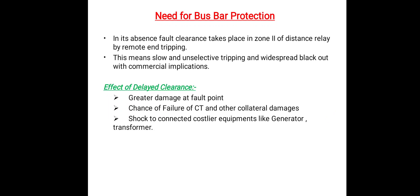What is the need for bus bar protection? Bus bar protection faults are rare, but if this fault occurs in our power system, considerable damage and disruption of supply will occur. In absence of bus bar protection, fault clearance takes more time because fault clearance will take place in zone 2 of distance relay by remote end tripping, meaning slow and unselective tripping and widespread blackout with commercial implications. The effects of delayed clearance include greater damage at the fault point, chance of failure of current transformer and other collateral damages, and shock to connected costly equipment like generators and transformers.